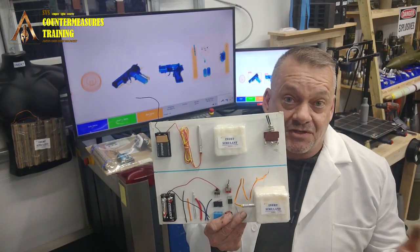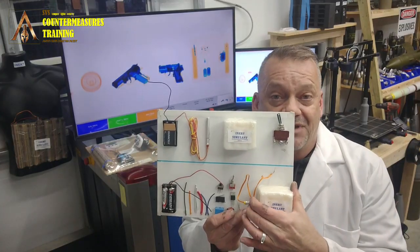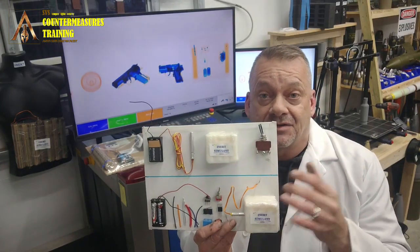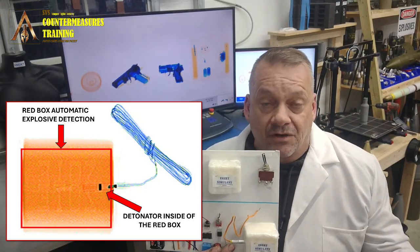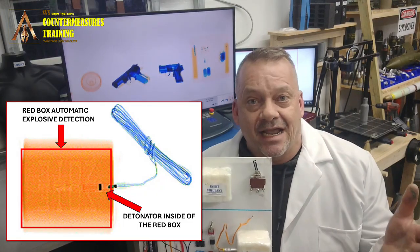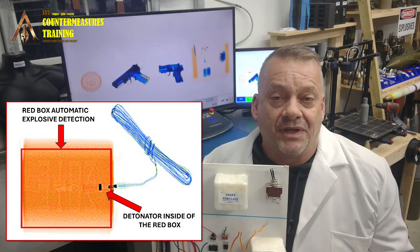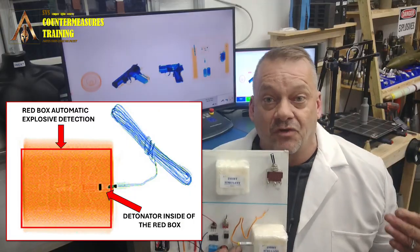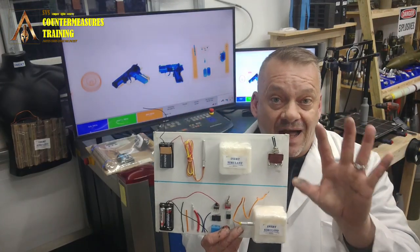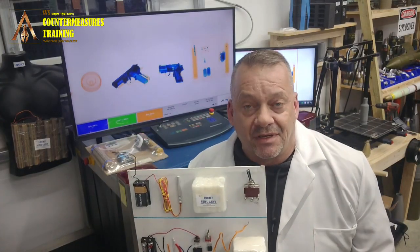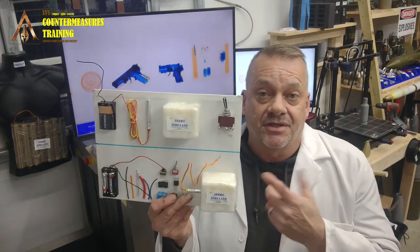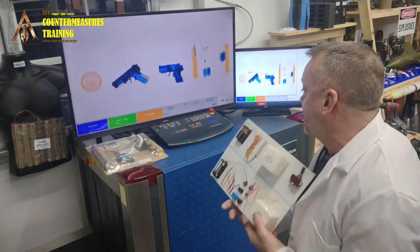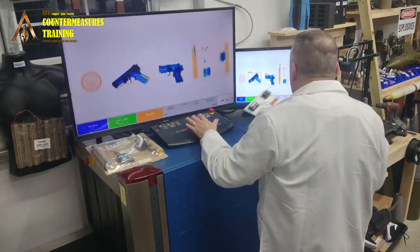After the switch — and a teachable IED can have more than one switch — you have the detonator, and then the explosive. The detonator has to be inserted into the explosive. So if you see the red box, the teaching we've always used is: look for the detonator inside the box — not the initiator, the detonator — and that's what cues them in that they potentially have an IED. Let's run this through the x-ray machine and look at how this looks.